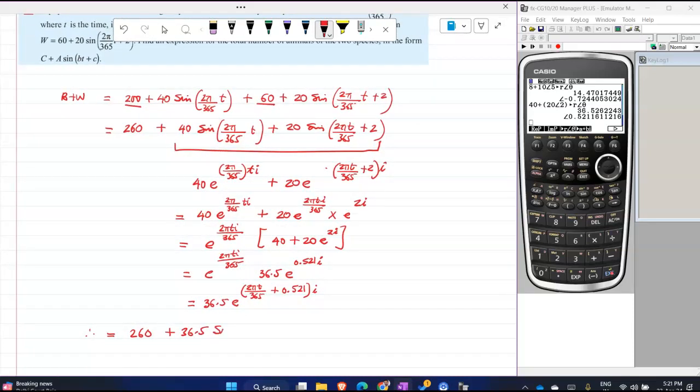Sine—your this is 2πT/365 plus 0.521. That's your final combined, that's your sum if you call it S, the sum of the two birds.